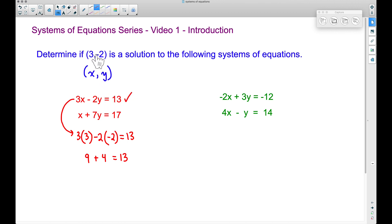However, that does not make this a solution, because we have to make sure it works for both of them. So let's come to this second equation here. We have x plus seven times y. We know that x is three, and we know that y is a negative two. So let's plug in the three and the negative two.